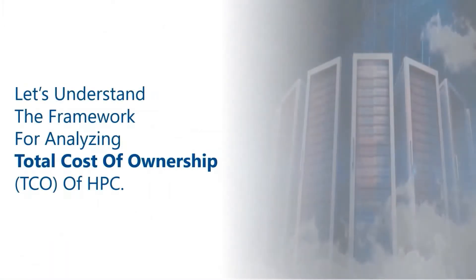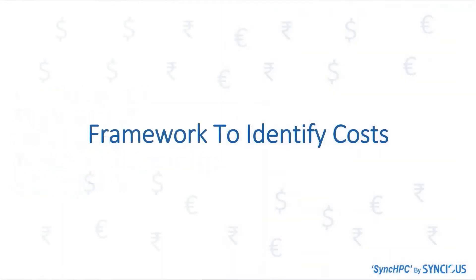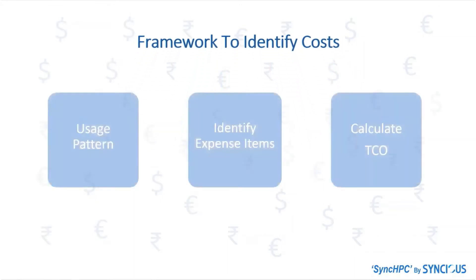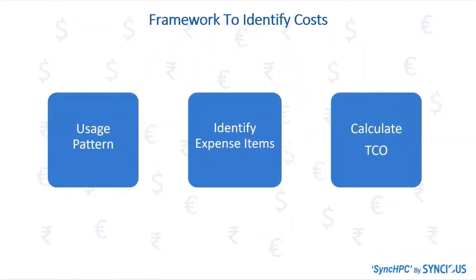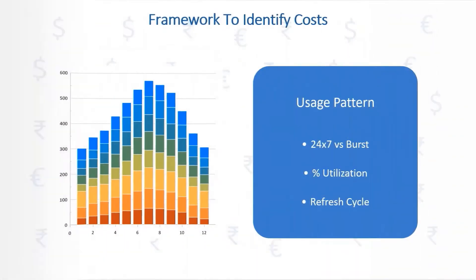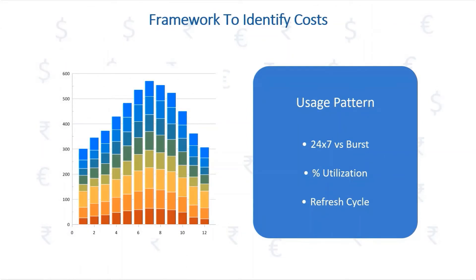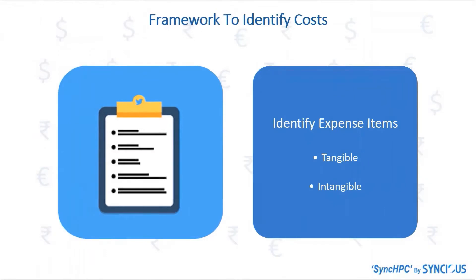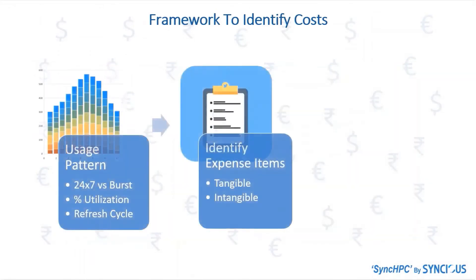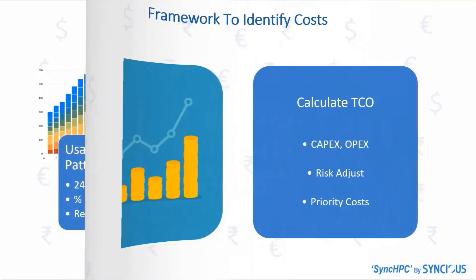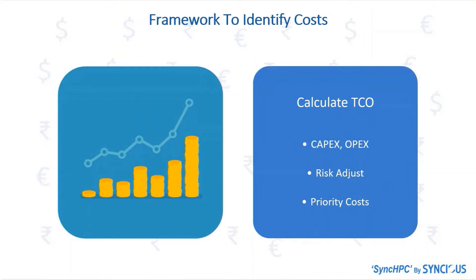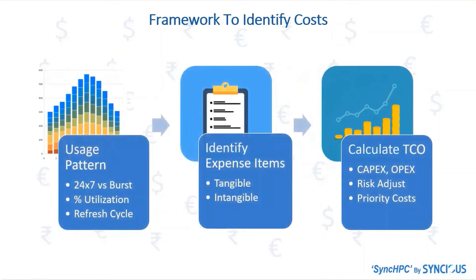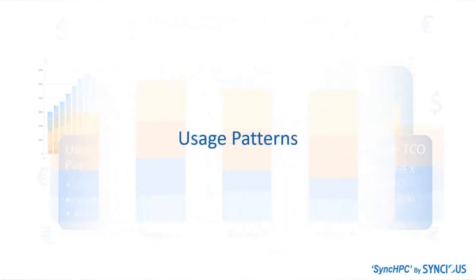While considering HPC, the total cost of ownership of HPC is a very significant aspect. Let's understand the framework to identify costs with these main three stages. The first stage is the usage pattern of HPC systems in various aspects. The second is to identify expense items — tangible and intangible. And the last stage is calculating TCO, that is the total cost of ownership.